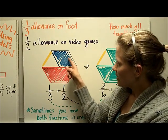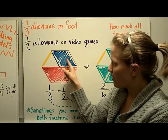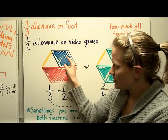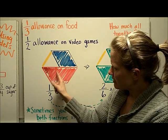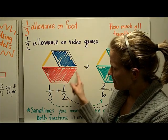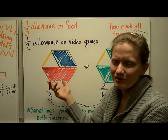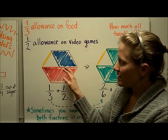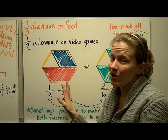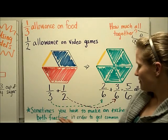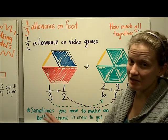If I tried to make this one red, it's too small — it'll have an overlapping piece. And if I tried to make this one blue, it would come about here and then I'd have this other triangle piece that I wouldn't know what to do with. So I can't make all of them red or all of them blue. Sometimes you have to make an exchange for both fractions — change the denominators of both fractions in order to get a common denominator.